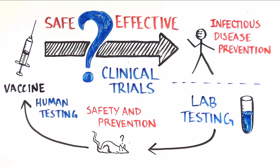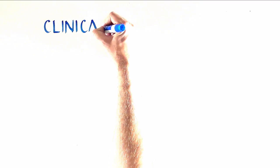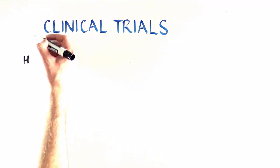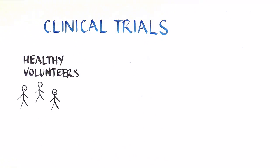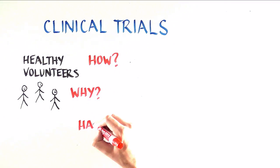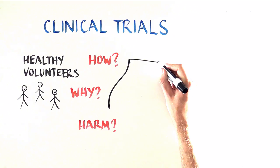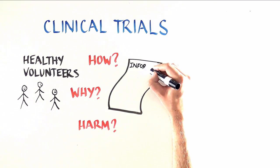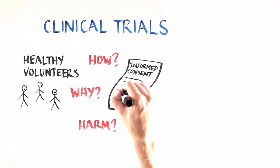Because we don't know whether or not the vaccine will work, we begin a very structured set of studies called clinical trials. These studies involve healthy volunteers who are told in detail about how and why this vaccine is being tested, and about any potential harm.